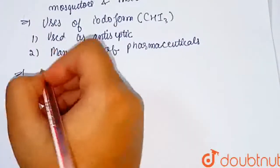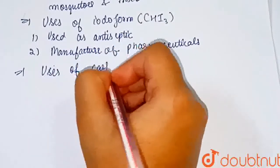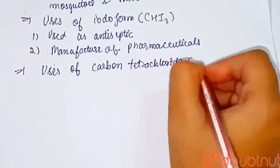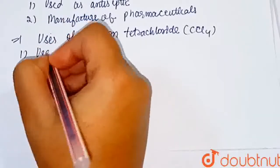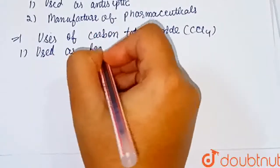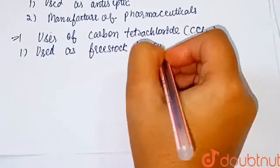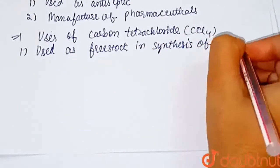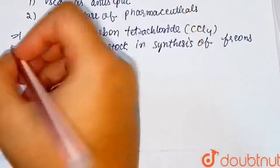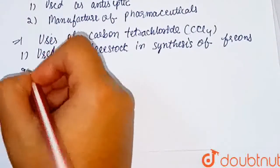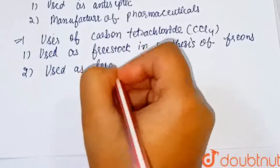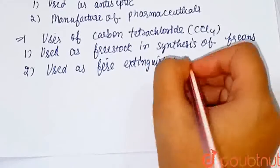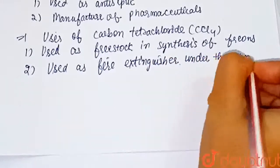Now uses of carbon tetrachloride which is CCl4. It is used as feedstock in synthesis of freons. It is used as fire extinguisher under the name pyrene.